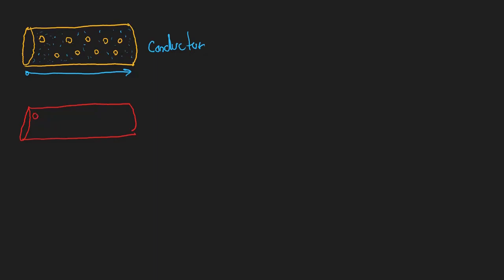If we contrast that with a material like wood or rubber, these materials are a little different. They will hold their electrons in a different arrangement — each individual atom or nucleus will hold its electrons fairly tightly. They might share electrons with one another, but at the end of the day, an electron is not going to be given up and allowed to move freely. So this is what we would call an insulator.